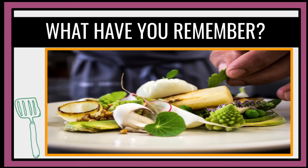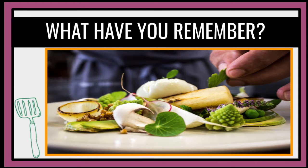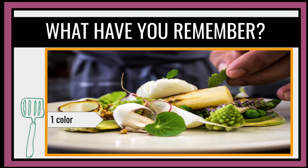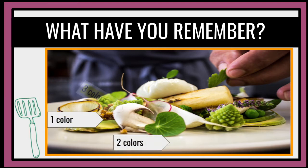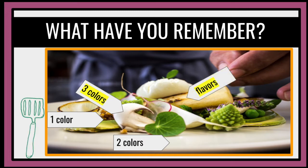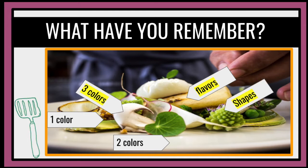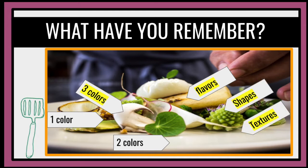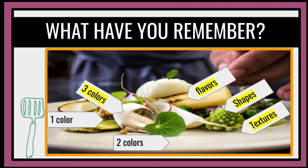Can you tell me what have you remembered so far on our previous discussion? Let's take a look. What have you remembered about colors? In plating, you must have at least three colors on your plate. You have to remember the word FAST — F for flavor, S for shapes, and T for textures, which has different variations and quality.